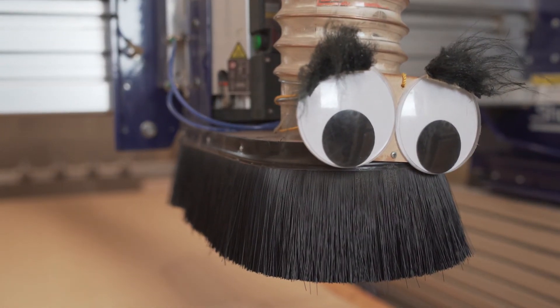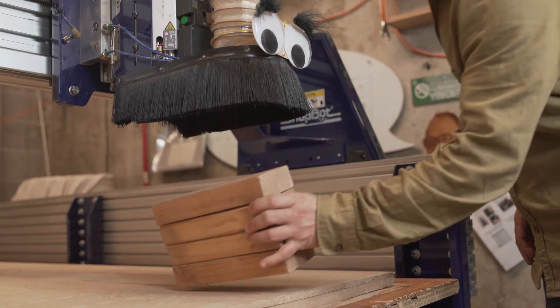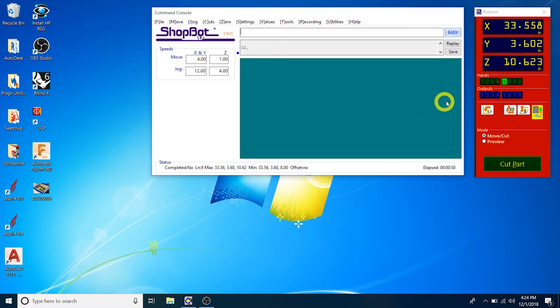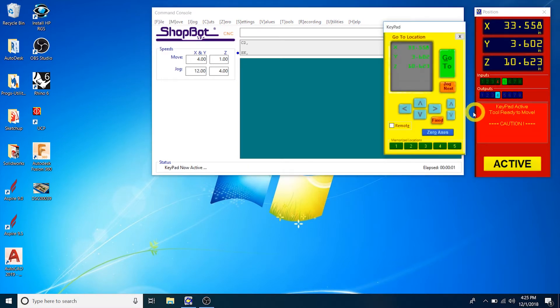Once the tool has been dropped off and the spindle has returned to you, place the dust skirt block directly below the spindle. Use the control software to lower the spindle within an inch or so above the dust skirt block.